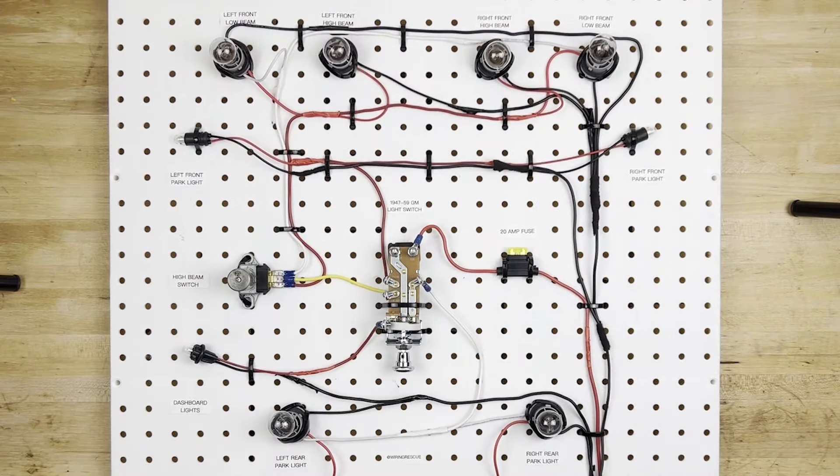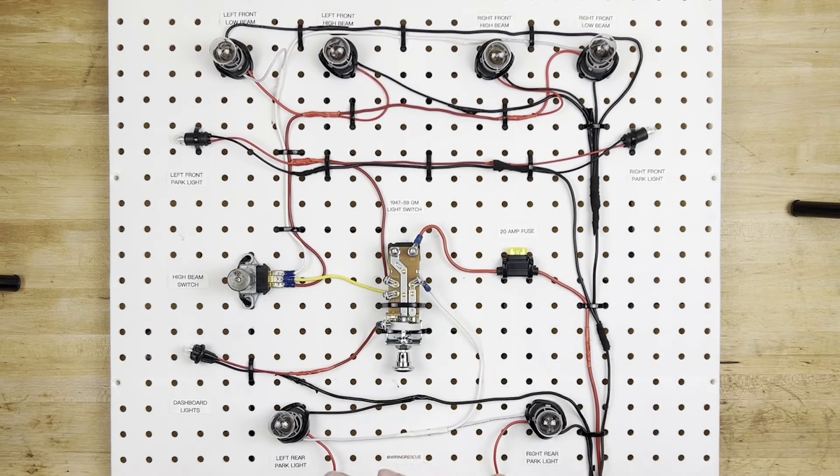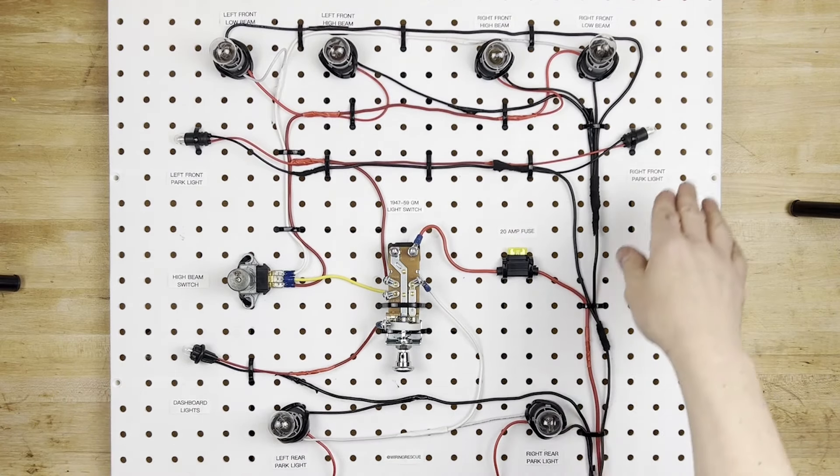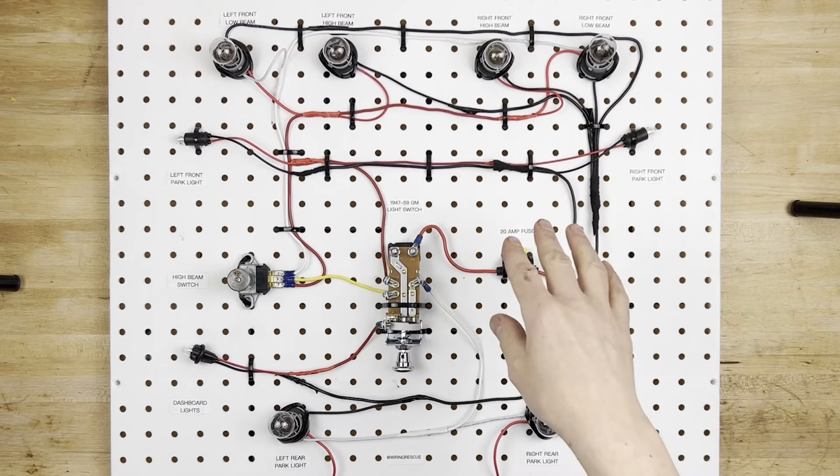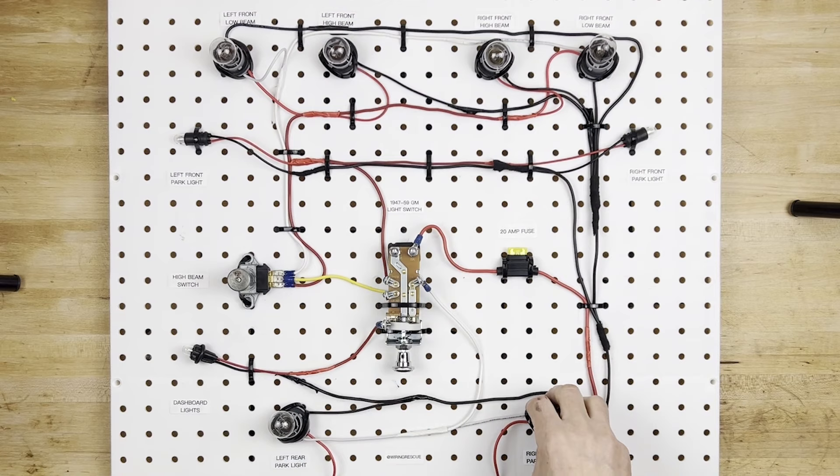Parking lights can be connected to turn signal lights. It can be two filament, it could be single filament. There's just a million different ways to hook up the parking lights to turn signals, or brake lights and turn signals.